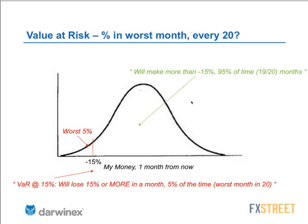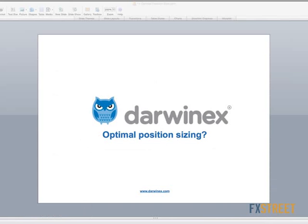Different people will have different goals. For instance, if you had a goal of risking 15% of your capital in the worst month every 20, then you would have what we call a value at risk of 15%. Different people trade with different values at risk.